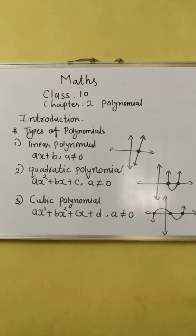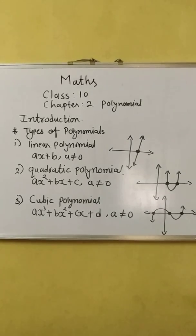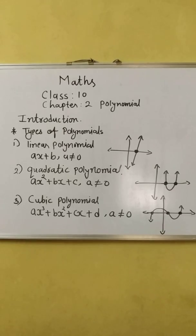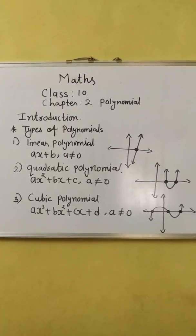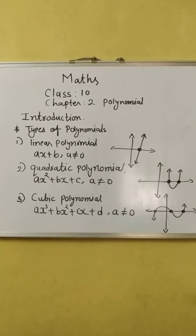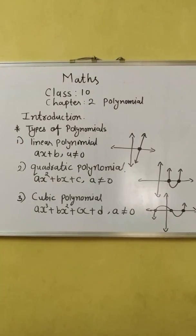It has degree as 1, so here in the figure we can see the graph of it is linear, a line, and it intersects x-axis at only and only at one point.